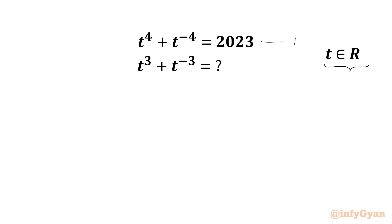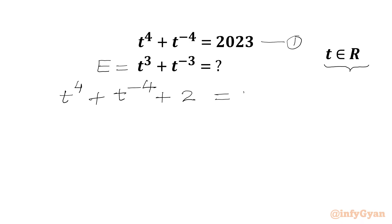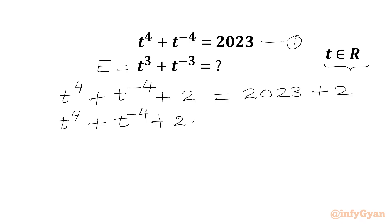Let's get started. This is our equation 1, and the expression we are looking for we will call E. We take the known equation t⁴ + t⁻⁴ and add 2 to both sides, giving us t⁴ + t⁻⁴ + 2 = 2025. The 2 can be written as 2 times t² times t⁻², since t² · t⁻² = 1, so 2 times 1 equals 2.